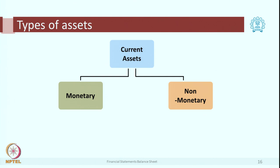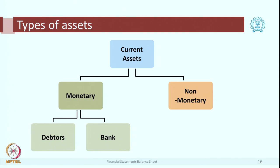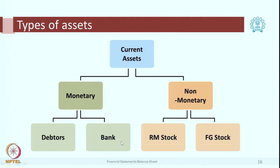The next type is current assets. Current assets have a life of less than 1 year. There are 2 major types: monetary and non-monetary. Within monetary, the examples are debtors and bank balances as we saw last time. In the non-monetary category, you have a variety of inventory or stock like raw material or finished goods. There is also one more type known as work-in-progress stock, which is also an example of a non-monetary asset.